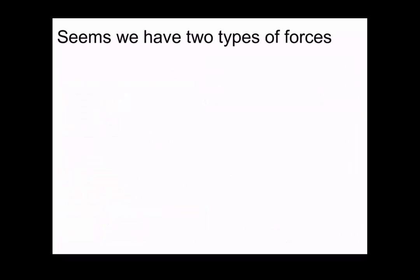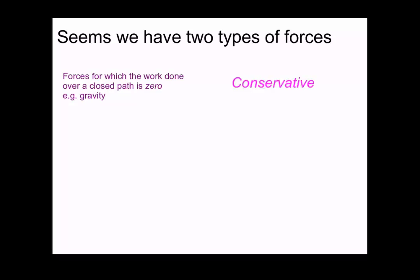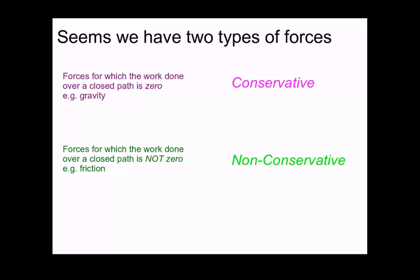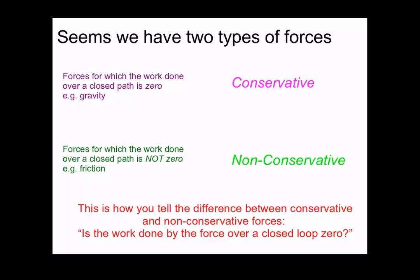It seems that we have two different types of forces. We have forces for which the work done over a closed path is always equal to zero — an example of this is gravity — and we call such forces conservative. We also have forces for which the work done over a closed path is not equal to zero — the frictional force is an example of this — and these are called non-conservative forces. The definition of a conservative force is a force for which the work done over a closed path is equal to zero, and this is the statement you can use to determine if a force is conservative or non-conservative.